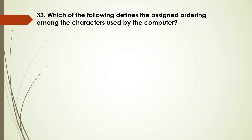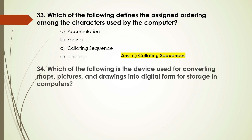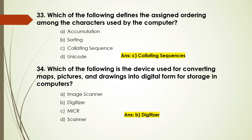Question number 33: Which of the following defines the assigned ordering among the characters used by the computer? Options are: accumulation, sorting, collating sequence, Unicode. The answer is C, collating sequence. Question number 34: Which of the following is the device used for converting maps, pictures, and drawings into digital form for storage in computers? Options are: image scanner, digitizer, MICR, scanner. The answer is B, digitizer.